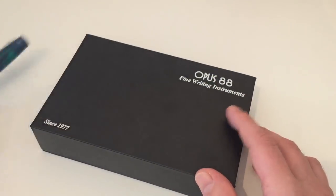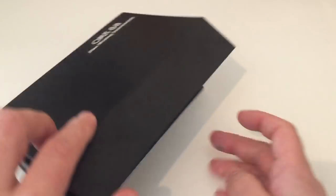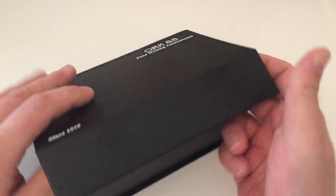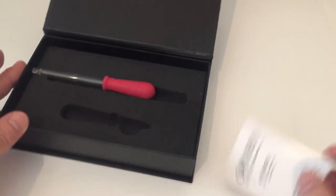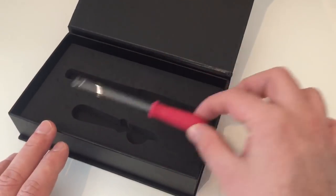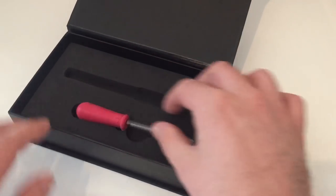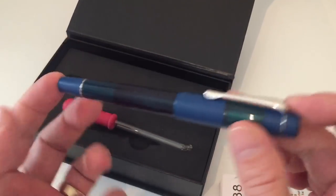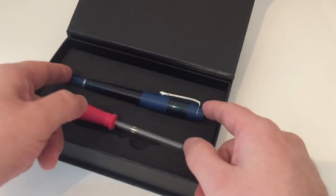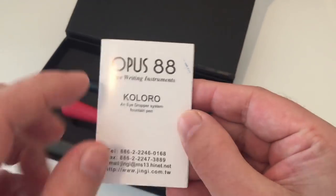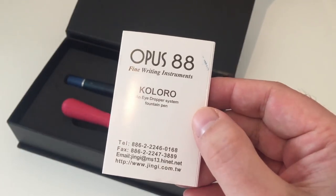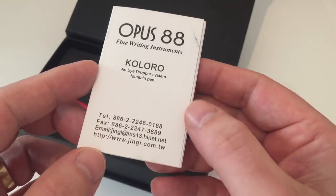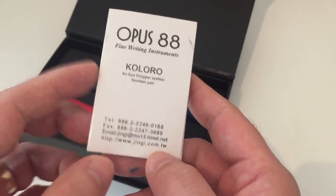The box has a magnet lock here, flips open like that, and you already see a bulb syringe that the pen comes with. You get a small booklet saying Opus 88 fine writing instruments Coloro, an eyedropper system fountain pen, and you see that the company is a Taiwanese company.